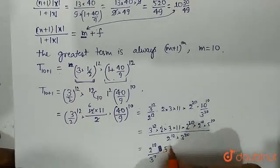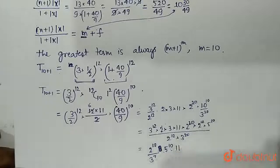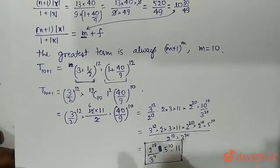The remaining term is 5 to the power 10 and 11 into 11. So this is the final answer, this is the greatest numerical term.